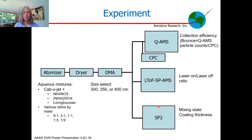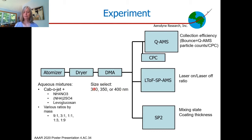So that's what this experiment is focused on. We atomized aqueous mixtures of CaboJet, which is a black carbon standard. We used CaboJet because the particles are spherical — not as aspherical as some other black carbon standards — so they focus into a narrower particle beam. We mixed that with ammonium nitrate, ammonium sulfate, or levoglucosan, and varied the mass ratios in aqueous mixtures from 9:1 black carbon to non-refractory material all the way up to 1:9 to cover a range of coating thicknesses. We dried the particles and selected with a DMA, using 300, 350, and 400 nanometer sizes.